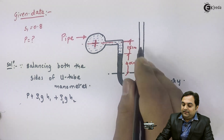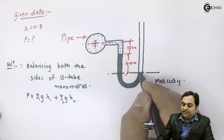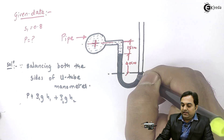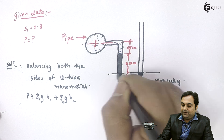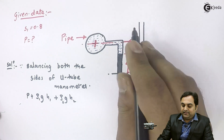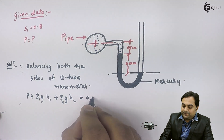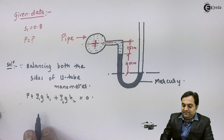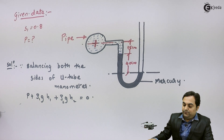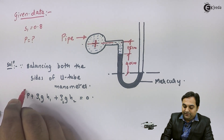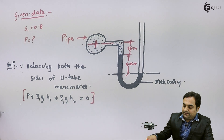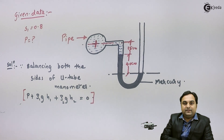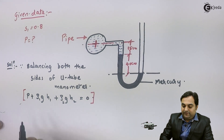This is the total pressure in the left limb. In the right limb there is no fluid above the horizontal datum line, so that is equal to zero. This completes the balancing of both limbs of the U-tube manometer.